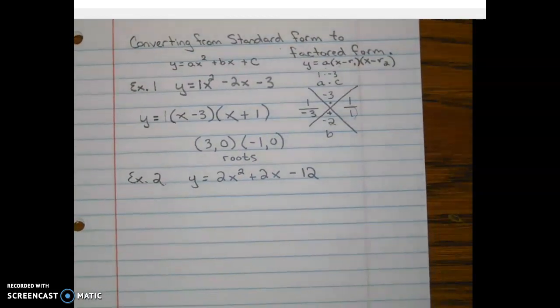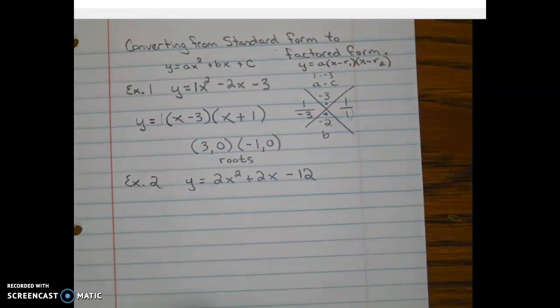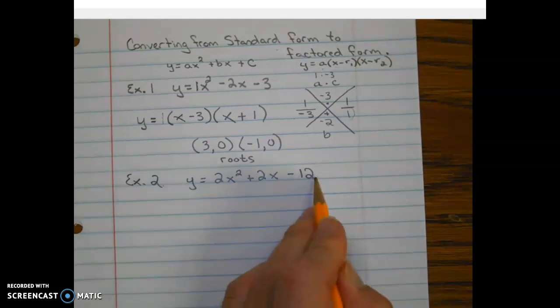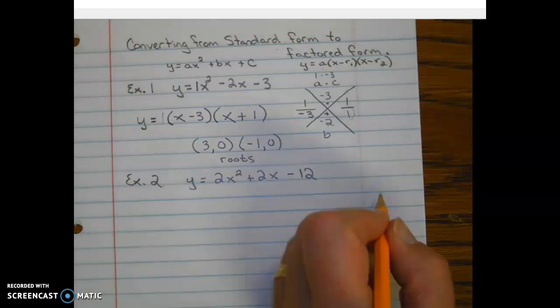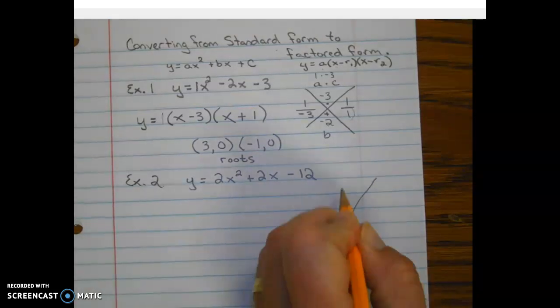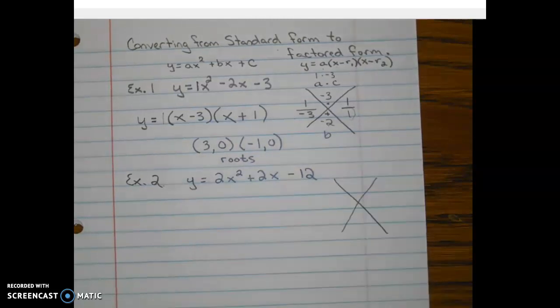Okay, so we're going to start off the same way. We're going to factor this trinomial here. We notice we have an A value of 2. So keep that in mind. We're going to draw our x, our little graphic organizer here to help us factor.